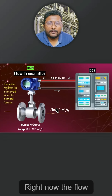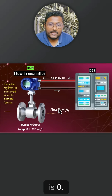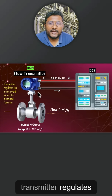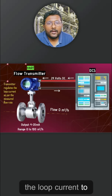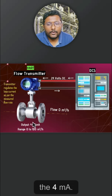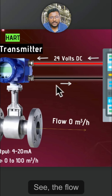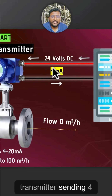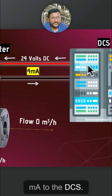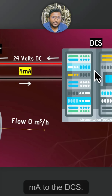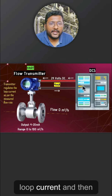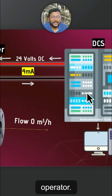Right now the flow is 0, so this flow transmitter regulates the loop current to 4 mA. The flow transmitter is sending 4 mA to the DCS.